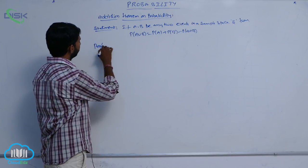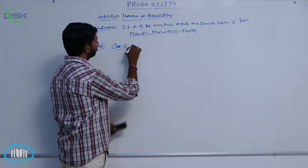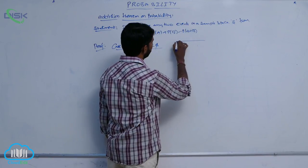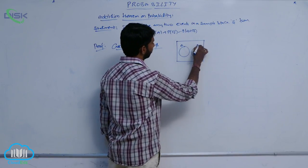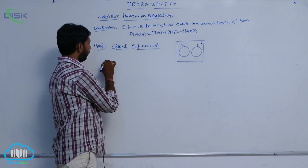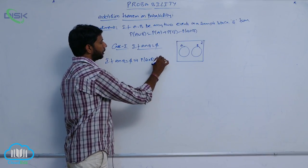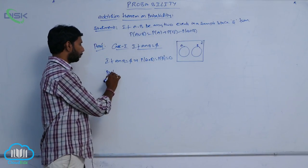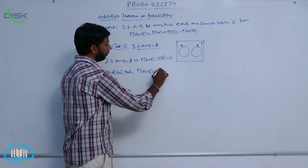Proof. Case 1: If A intersection B is equal to the empty set. Draw the diagram for A intersection B being an empty set. That implies the probability of the empty set is equal to 0, by definition of probability. Therefore, P of A union B is equal to P of A plus P of B.